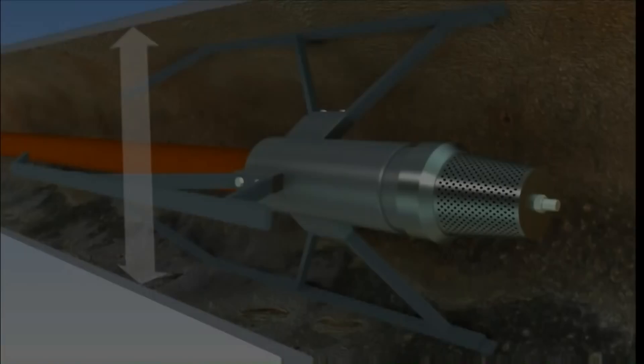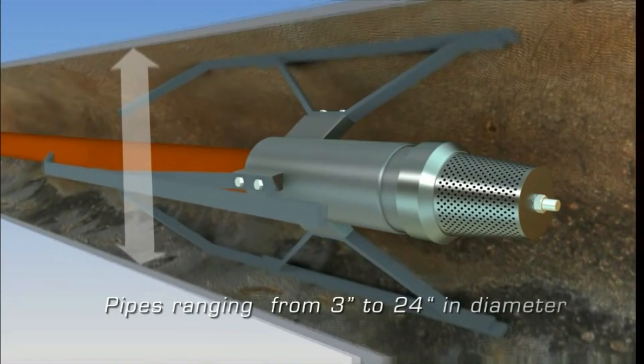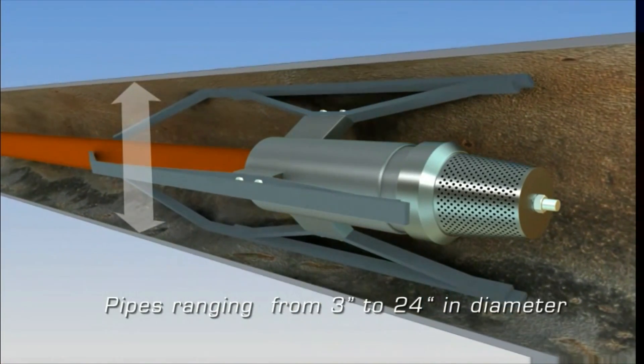Triton linings can be utilized in pipes ranging from 3 inches to 36 inches in diameter up to 600 feet in length.